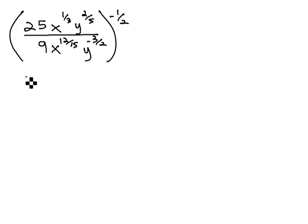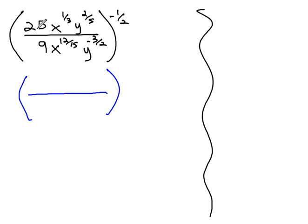So first, inside the parentheses, and then we'll save kind of the left side here for some chicken scratch. Inside the parentheses, we've got a 25 over 9. That can't reduce at all, 25 over 9.